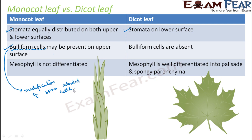Why do these cells modify themselves? When buliform cells absorb enough water, the leaf surface is exposed. When they become flaccid, the leaves curl to minimize water loss. You may have noticed grass leaves curling — that happens because the plant cannot afford too much water loss. This curling and exposure of the leaf surface is controlled by the buliform cells.